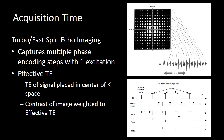Another way to reduce acquisition time is with turbo or fast spin echo imaging. This allows us to generate multiple echoes with one RF excitation. Instead of waiting the full TR between each individual echo, we generate multiple echoes from one RF pulse and fill multiple lines of k-space. We generate an RF pulse, apply a phase-encoded gradient, generate an echo, and fill a line of k-space. We then do a 180-degree refocusing pulse, another phase-encoded gradient, and generate another echo to fill another line of k-space. With modern techniques like turbo spin echo, we can sometimes fill all of k-space for a single slice with a single acquisition.